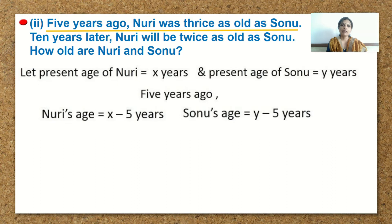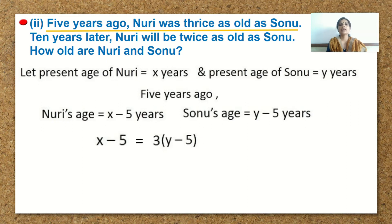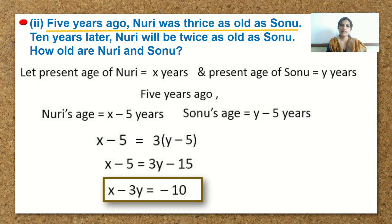The condition is: 5 years ago, Nuri was thrice as old as Sonu. So, Nuri's age x minus 5 is equal to thrice Sonu's age. We open the bracket: x minus 5 is equal to 3y minus 15. Shifting the terms, we get our first equation as x minus 3y is equal to minus 10.